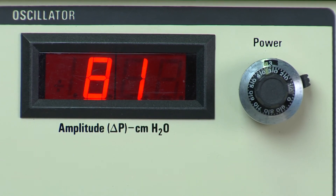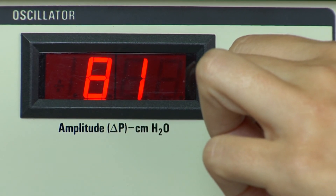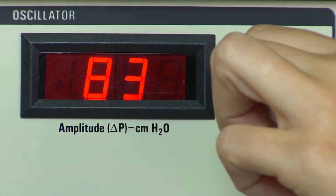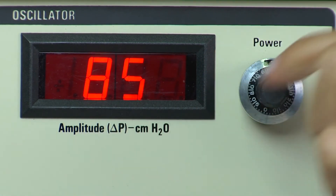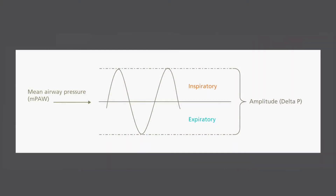Piston displacement is controlled by the power control, which is a graduated 10-turn potentiometer. The small lever on the control is a lock; it is set by moving the lever down. To unlock the control, lift the lever before turning. The displayed amplitude is the peak-to-peak oscillatory pressure measured at the airway opening. It's important to note that the pressure amplitude reported by the instrument is the sum of both the inspiratory and expiratory phases of the ventilator.